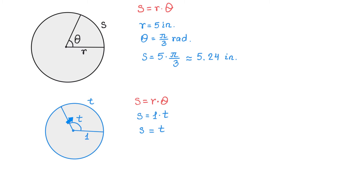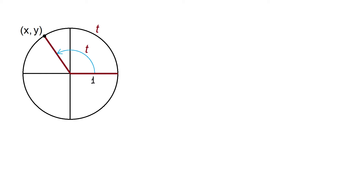In both cases, we say that T is a real number. Looking at this unit circle, we have an angle measuring T radians and a point with coordinates X and Y located on the terminal side of this angle. If the origin of the rectangular coordinate system is at the center, then the starting point has coordinates 1, 0. If we start at this point and travel along the circle to point X, Y, we travel a distance of T units. If we move counterclockwise, T is positive; if we move clockwise, T is negative.